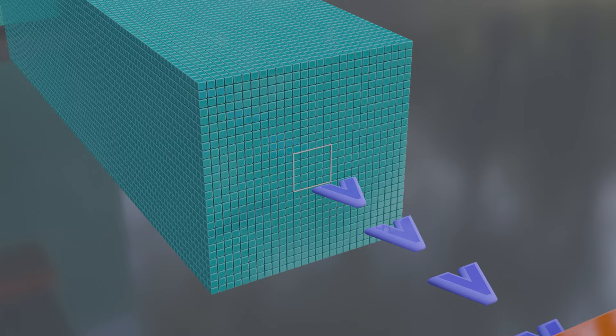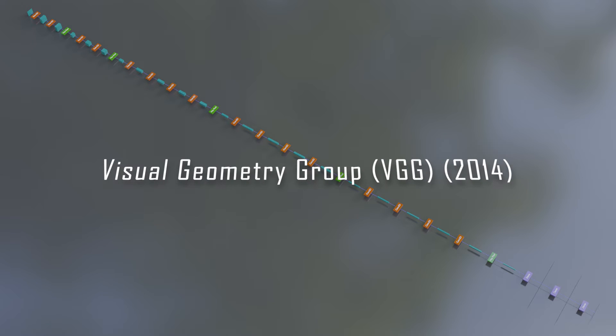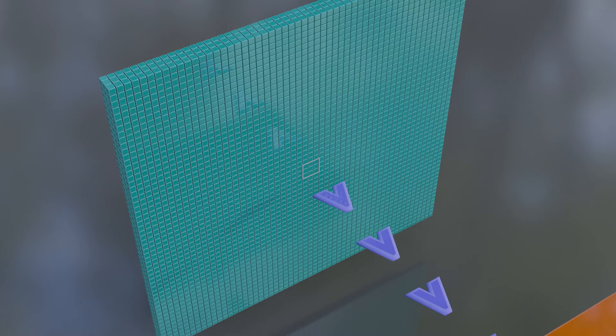Because the very next year, in 2014, 3 by 3 filters took the throne. The visual geometry group from Oxford won with a network using exclusively 3 by 3 kernels.